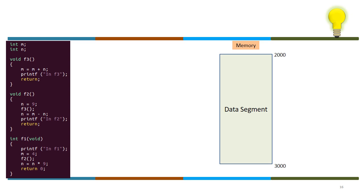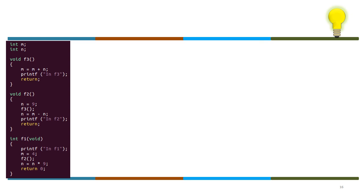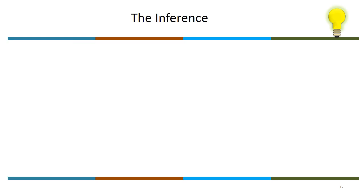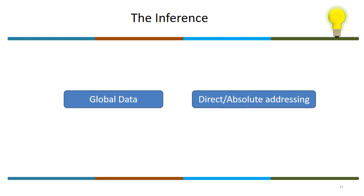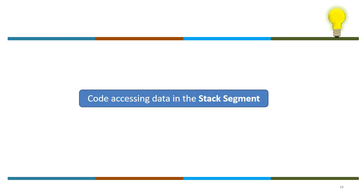The data segment is fixed. The compiler will know about the data segment addresses. The inference is: global data will be addressed in an absolute way — it is absolute addressing, or direct addressing. Absolute addressing means the base address is zero.